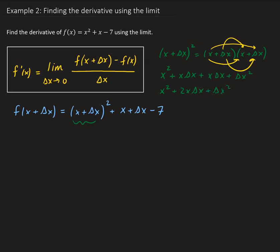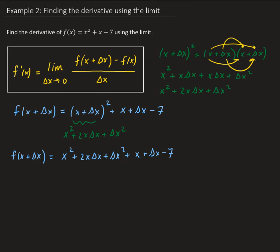So this is equal to x squared plus 2x delta x plus delta x squared. That's going to go into our expression, so f of x plus delta x is equal to x squared plus 2x delta x plus delta x squared plus x plus delta x minus 7. This result is now going to go into the limit definition.